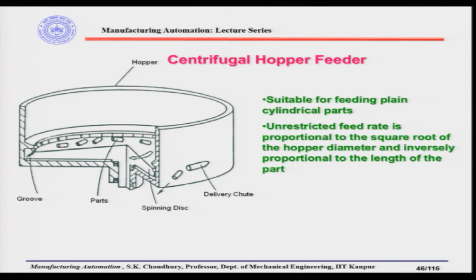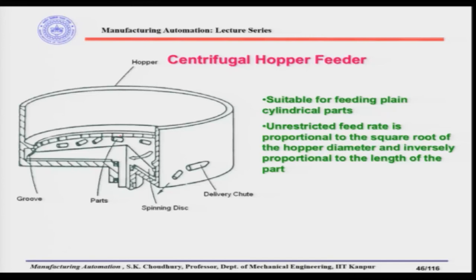When the hopper rotates, the small parts also rotate and receive centrifugal force, so they move to the outer periphery and get nested in the slots. When these slots align with the delivery chute — which is tangential to the hopper wall — the parts come out. This kind of hopper feeder is suitable for feeding plain cylindrical parts, and the unrestricted feed rate is proportional to the square root of the hopper diameter and inversely proportional to the length of the part. Let us first clarify what unrestricted feed rate means.